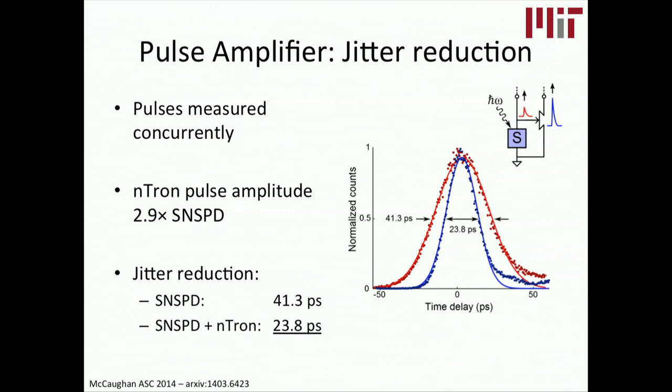Certainly the n-tron isn't reducing timing uncertainty. It's not removing uncertainty from the system. That's sort of ridiculous to imagine. But what it is doing is it's creating a much larger pulse, having a much higher slew rate, and pushing back the effect of noise on the jitter that you normally see. And so you end up reading out a lower jitter from the n-tron pulse, because the amplitude of its pulse is much higher.